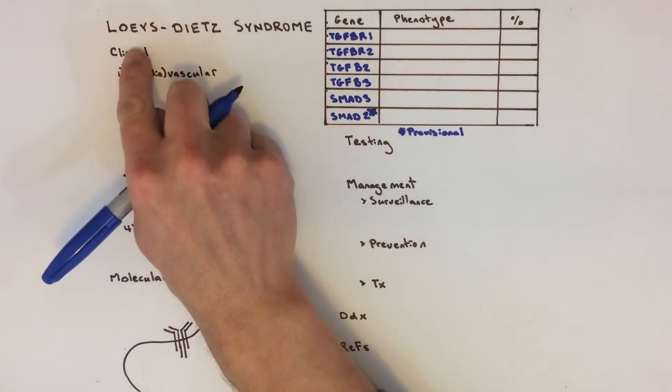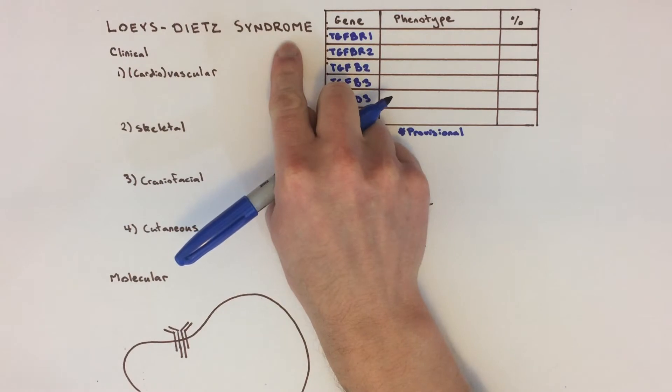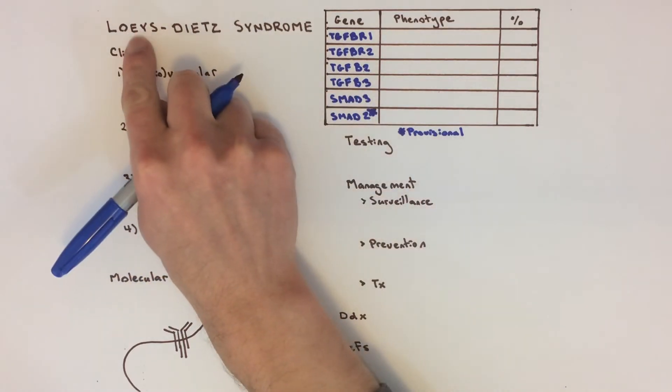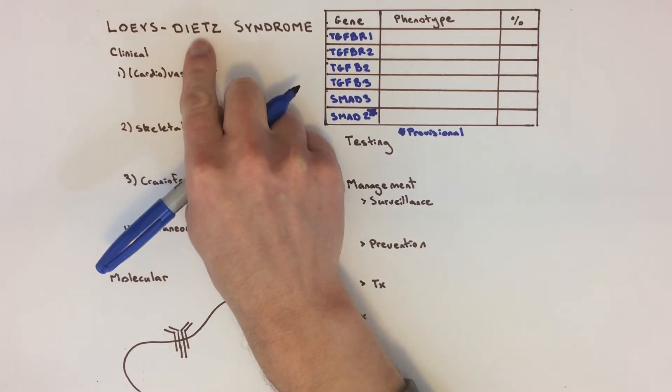Loeys-Dietz syndrome is a genetic connective tissue disorder. It's named after two doctors, Dr. Loeys and Dr. Dietz, who first discovered its genetic cause.